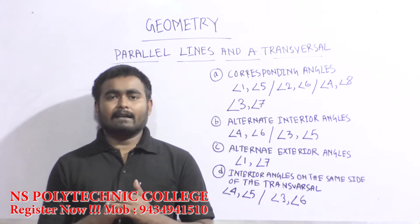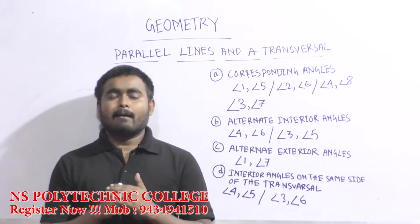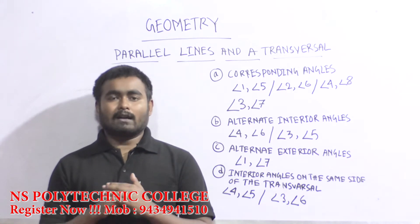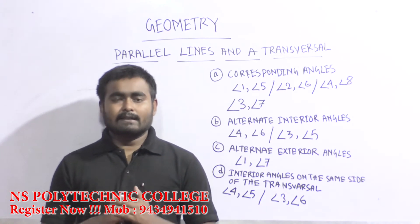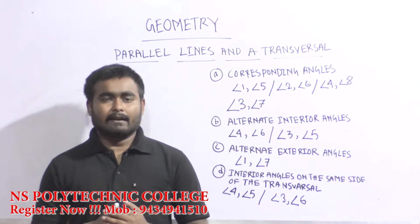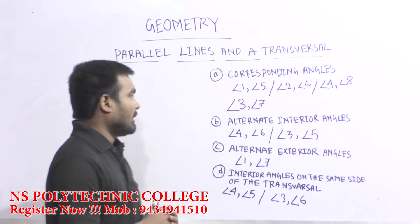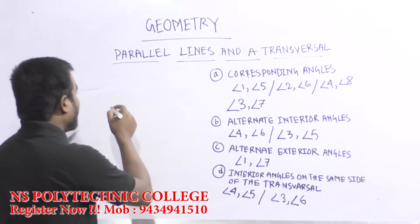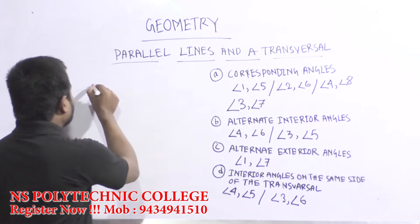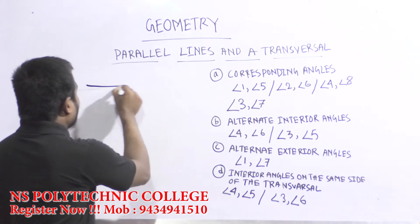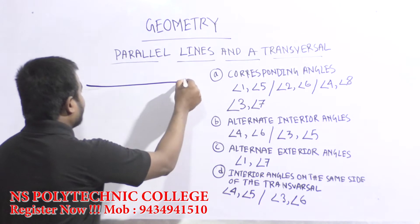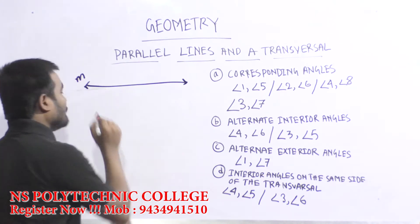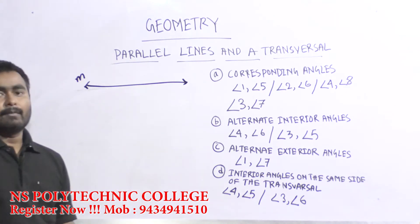Now we have to see parallel lines and transversal. Now we have two parallel lines. This is a parallel line, which I have labeled as A.